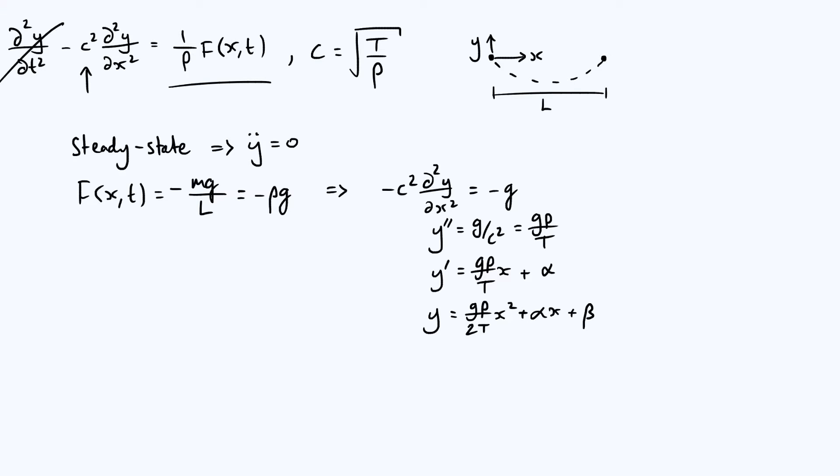So to decide what those constants alpha and beta should be, we've got to apply some boundary conditions. So let's say bc is for boundary conditions over there. Well, from the diagram, you can see that by definition of our coordinate system, the y value when x is 0 is just 0. But also the y value when x is equal to l is also 0, because those two points that we attach to the end of the chain are at the same height. So you can say y of 0 is equal to y of l, and both of those are equal to 0.